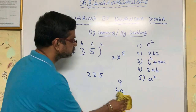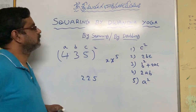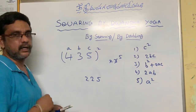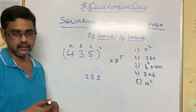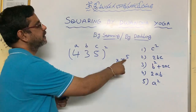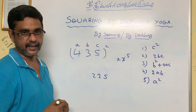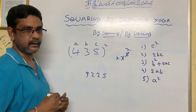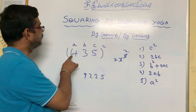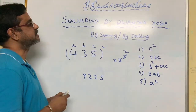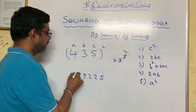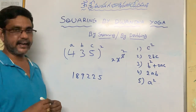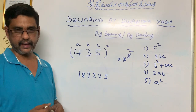Step 4: compute 2AB. AB is 4 into 3 equals 12, double it to get 24. Add the carry-over number 5: 24 plus 5 is 29. Write 2 here and 9 here. And the last step is A square: 4 square is 16, plus the carry-over 2 gives 18. So the final answer is 189225. Thank you.